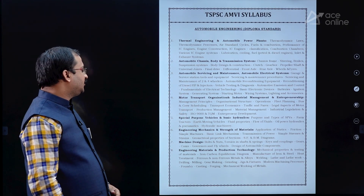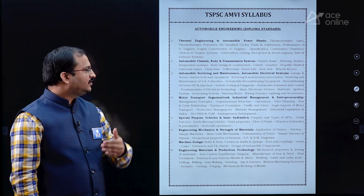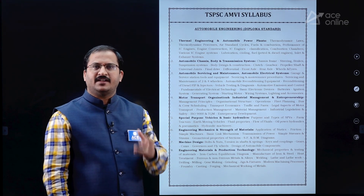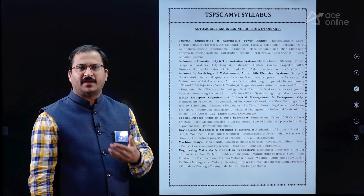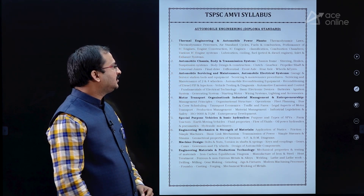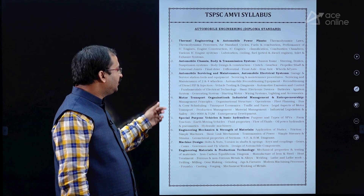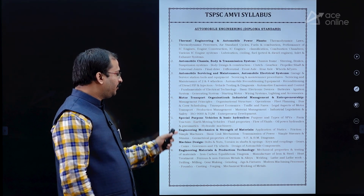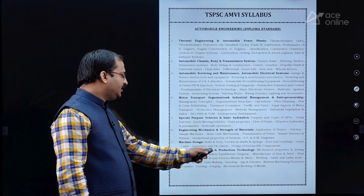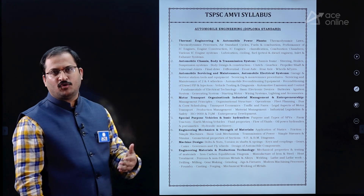The TSPSC syllabus has 8 different subjects, each with 100 practice questions in the book, along with previous year papers segregated chapter-wise and subject-wise. The 8 subjects are: Thermal Engineering and Automobile Power Plants; Automobile Chassis Body and Transmission System; Automobile Servicing and Maintenance; Automobile Electrical Systems; Motor Transport Organization and Industrial Management and Entrepreneurship; Special Purpose Vehicles and Basic Hydraulics; Engineering Mechanics and Strength of Materials; Machine Design; and Engineering Materials and Production Technology.